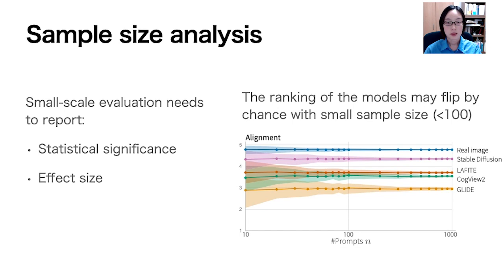Here we provide a sample size analysis. Sample size is important in human evaluation because it affects the reliability of conclusions. This graph shows how the number of tested prompts influences the reliability of human evaluation. The lines represent average human ratings of alignment over 500 trials with a 5 to 95 percentile interval. When there are fewer prompts, the ranges overlap more, meaning that conclusions from small samples can change based on the prompts chosen. Based on our experimental results, we need to use over 100 samples to compare these models for better reliability. For small-scale experiments, we advise reporting statistical significance and effect size to provide a more comprehensive understanding of outcomes.